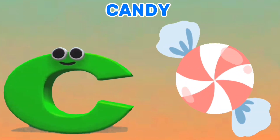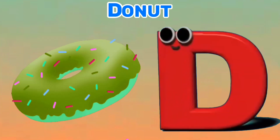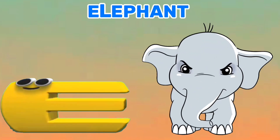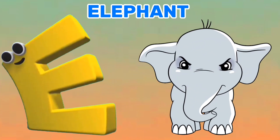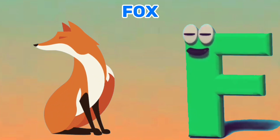C is for Candy. C, C. D is for Donut. D, D. E is for Elephant.